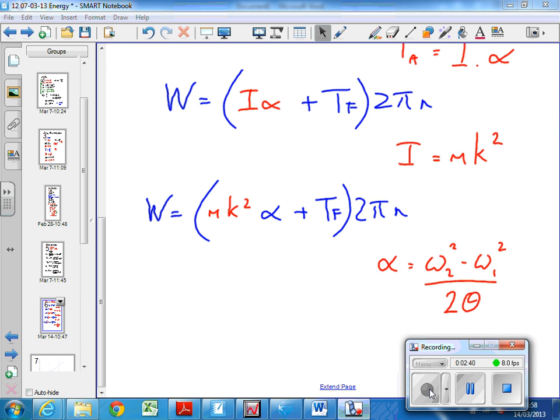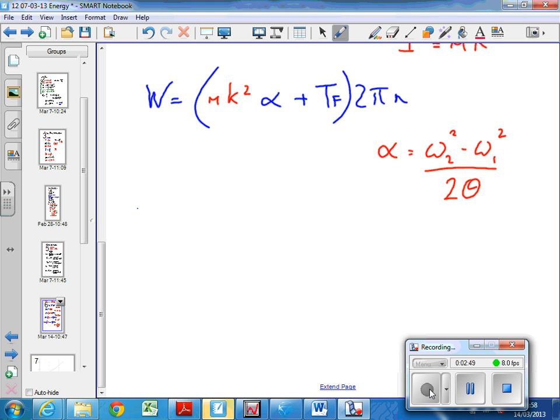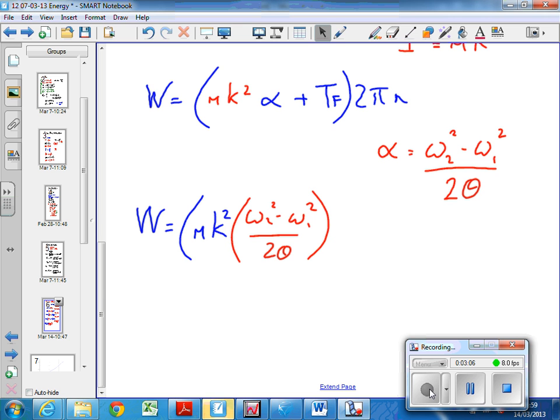So we know alpha is omega 2 squared, which is the final angular velocity, minus omega 1 squared over 2 theta. So we get that the work done equals mk squared times this lot. So I need to put that in a bracket. Omega 2 squared minus omega 1 squared over 2 theta plus the friction torque times 2 pi n.